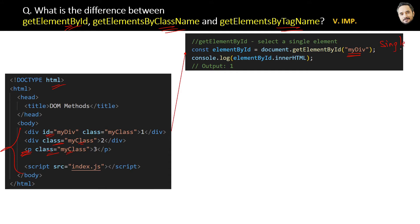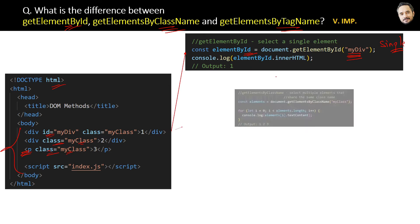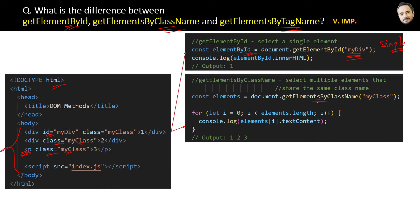Inside the brackets we pass the ID of the element as a parameter, and then we hold that reference in some variable like this. The next one is getElementsByClassName — this will select multiple elements that share the same class name, so here in the code you pass the class name as a parameter.